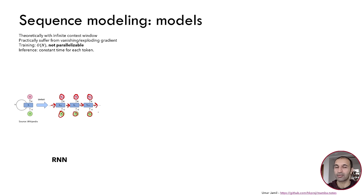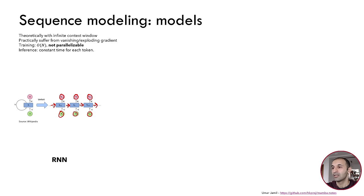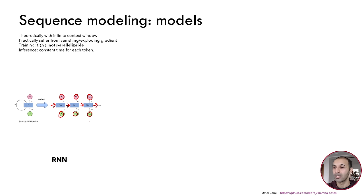As you can see, this sequential generation of output is not parallelizable because to generate the nth token we need the n-minus-one token. So training of this kind of model cannot be parallelized, and this is one of the reasons the transformer has been so successful. However, the inference time is constant for each token — the effort from a computational and memory point of view to produce one token is always the same, whether it's the first token or the 100th. Theoretically this model has infinite context length because we can continue the sequence forever, but practically we cannot because it suffers from vanishing and exploding gradients.